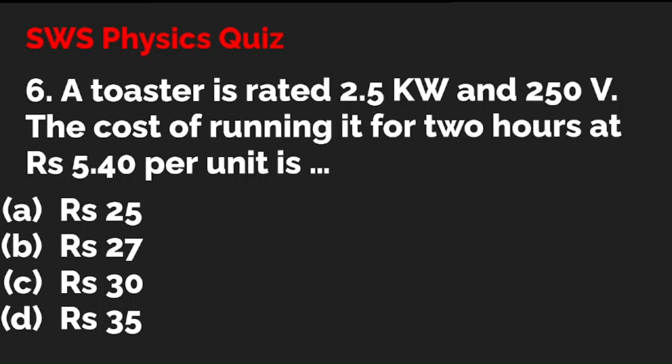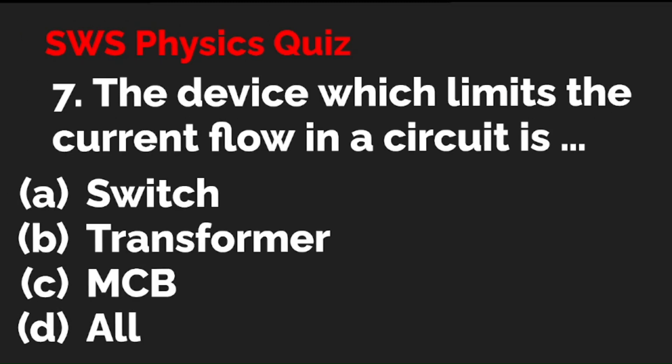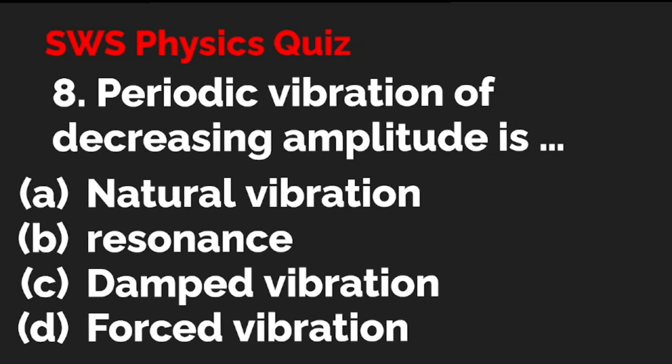I hope many of you got it right. Question 7: The device which limits the current flow in a circuit is — option A: switch; option B: transformer; option C: MCB; option D: all of the above. The correct answer is C — MCB.